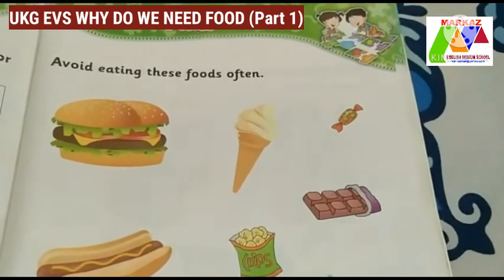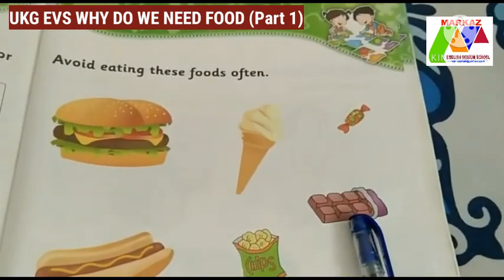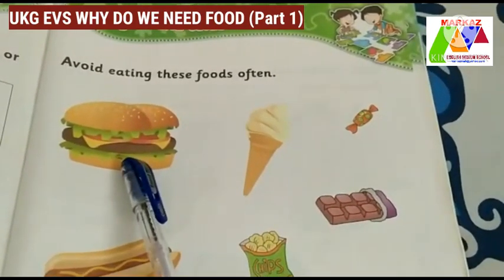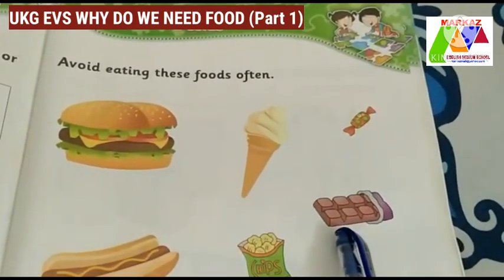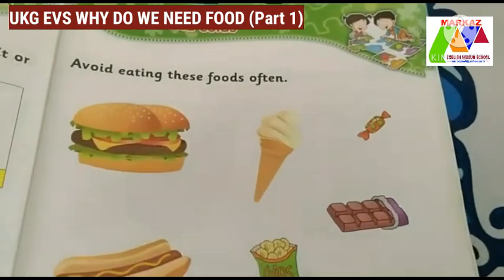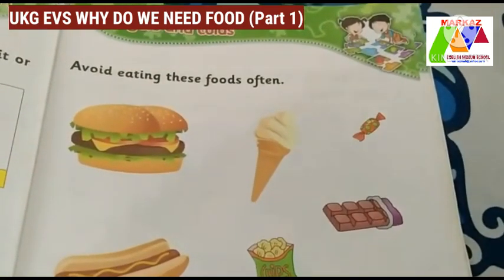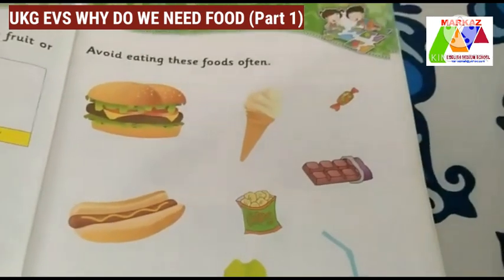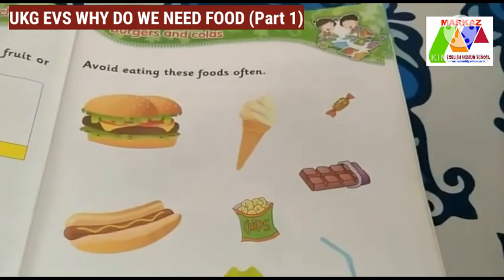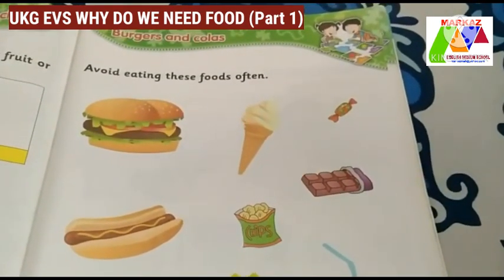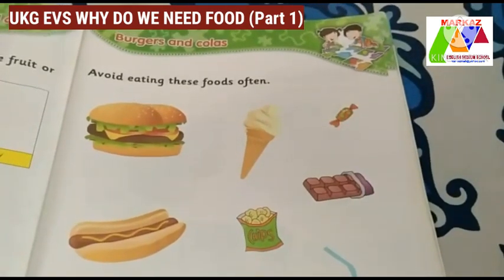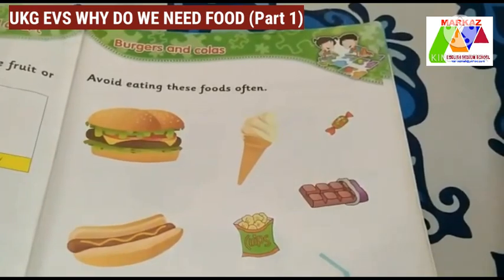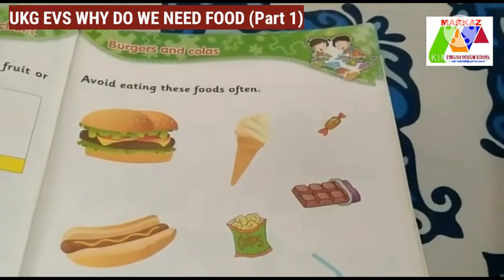Some junk food items are sweets, chips, burger, chocolates and fizzy drinks. These are the main junk food items. You should avoid these types of food items as they are very harmful for our body.